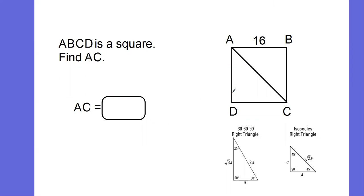Thinking back to our properties of squares, I know that squares have right angles. So this has to be a right angle right here.